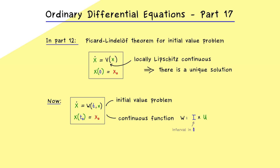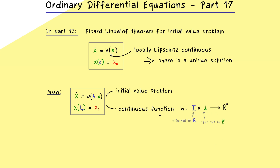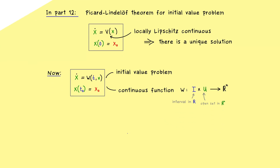For the time variable t, we choose an interval for the domain, and for the space variable x, we have an open domain in Rⁿ. Both things are important to remember. The best case would be to have the whole domain R times Rⁿ, mapped to Rⁿ again. We can visualize this easily: take one axis for t and one for x. The interval can be any interval — closed, open, bounded, unbounded — the important thing is that it is completely connected.